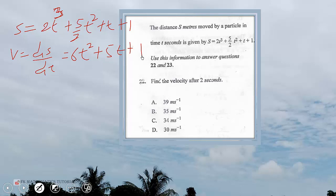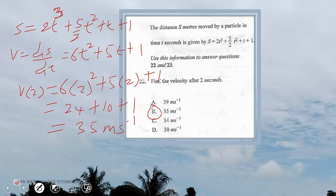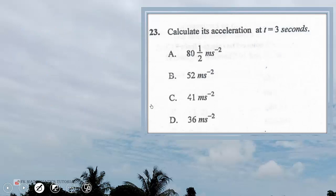Velocity after two seconds: v(2) equals 6 times 2 squared plus 5 times 2 plus 1. This gives us 6 times 4, which is 24, plus 10, plus 1, giving us 35 meters per second. That is option B.